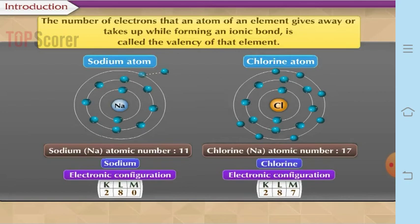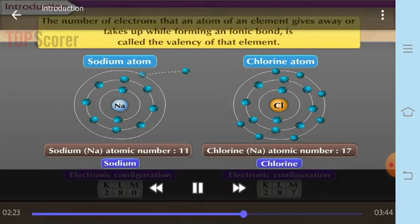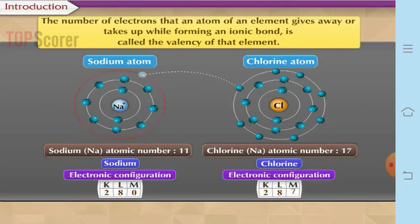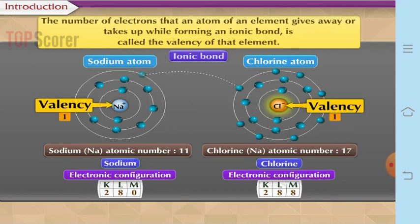Now let us see in the case of chlorine. Chlorine's atomic number is 17 and its electronic configuration is 2, 8, 7. So it requires one electron to complete its outermost shell. Instead of giving away seven electrons, it takes up one electron. After gaining one electron, the total number of electrons becomes 18, whereas the protons in the nucleus are only 17. That means it has one extra negative charge, so it becomes −1. So sodium is +1 and chlorine is −1, and both of them have a valency of 1. Sodium gives away one electron and acquires a positive charge, whereas chlorine accepts one electron and attains a negative charge.